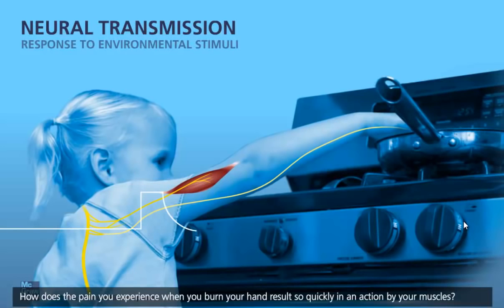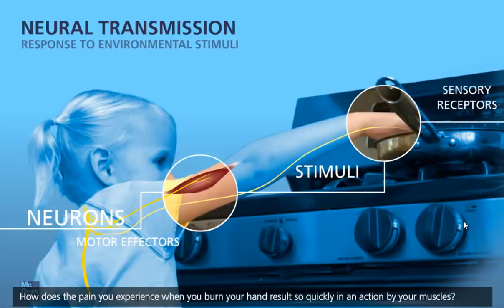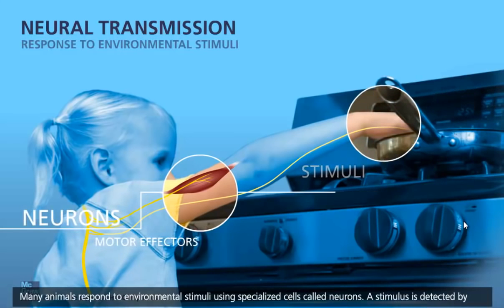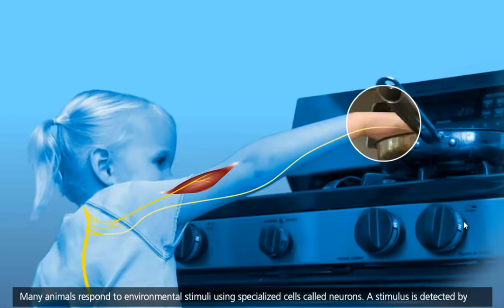How does the pain you experience when you burn your hand result so quickly in an action by your muscles? Many animals respond to environmental stimuli using specialized cells called neurons.